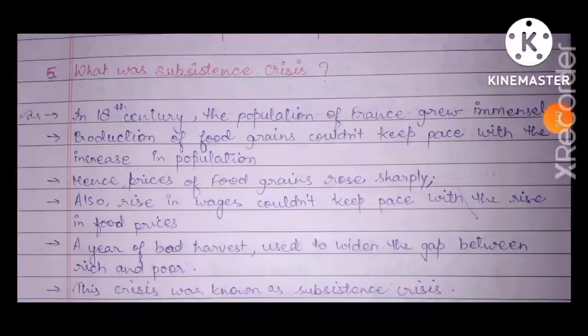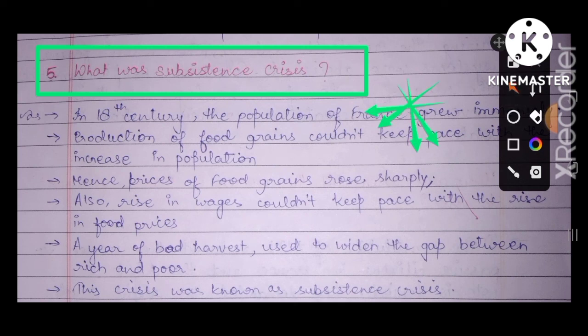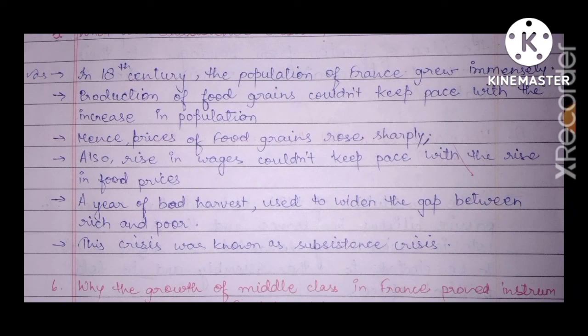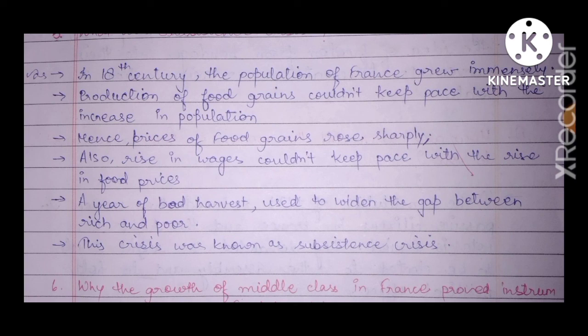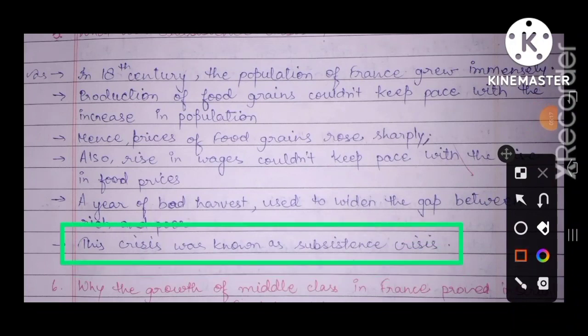Question five — put a star on this one — it's very prominent: what was the subsistence crisis? In the 18th century, the population of France grew enormously, but the production of food grains couldn't keep pace with the increase in population. Hence prices of food grains rose sharply. Also, the rise in wages couldn't keep pace with the rise in food prices.